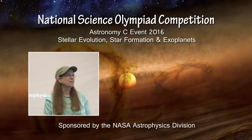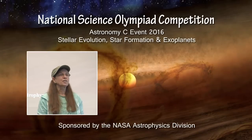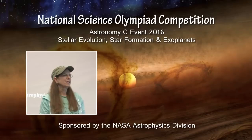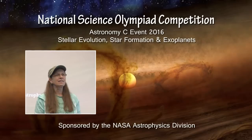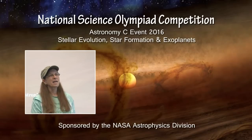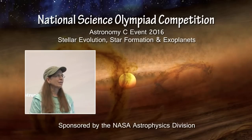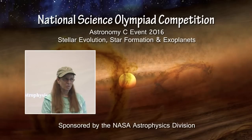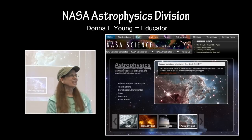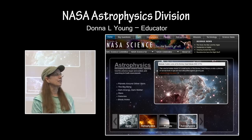This is a presentation of the National Science Olympiad Astronomy C event for 2016, being held at the University of Wisconsin-Stout in Menominee, Wisconsin on May 20th and 21st. It has the same topic as last year's competition in astronomy: stellar evolution, star formation, and exoplanets. I am an educator for the NASA Astrophysics Division and one of the two co-national event supervisors for the Astronomy event.